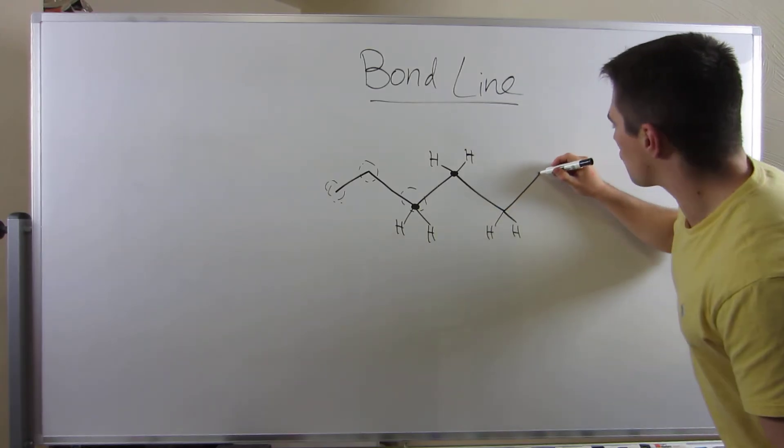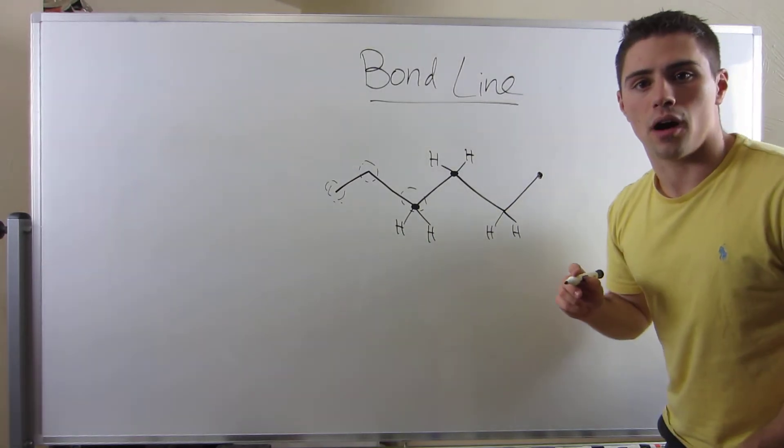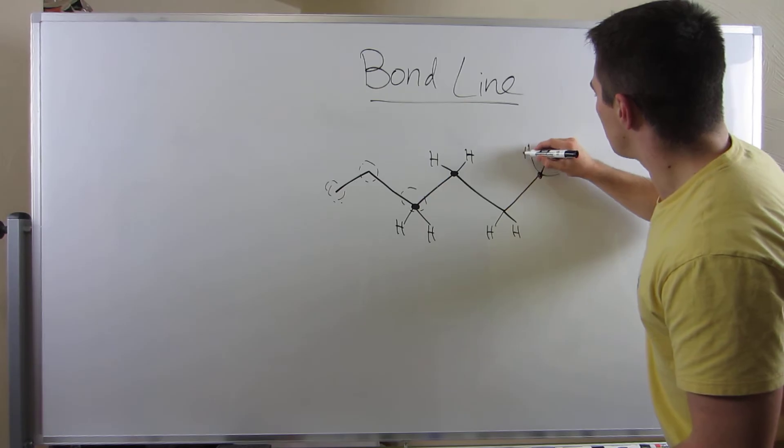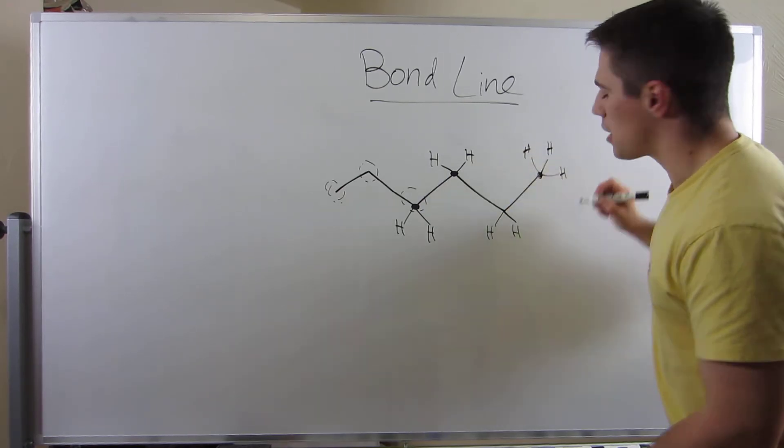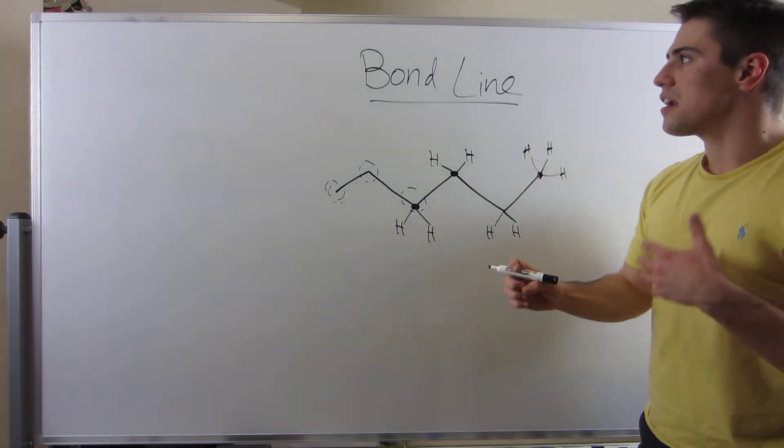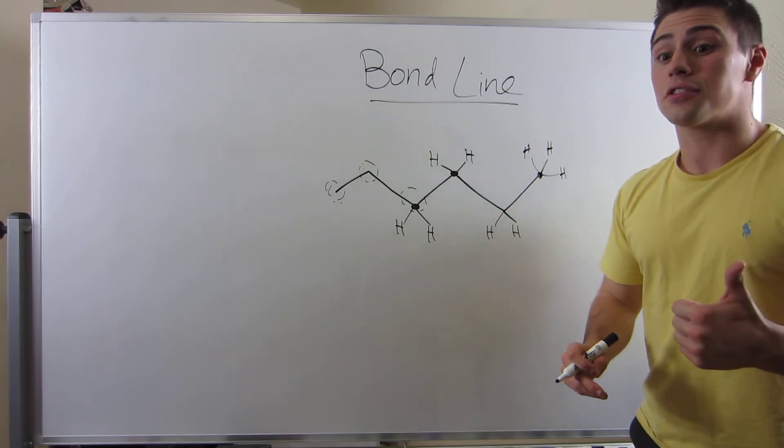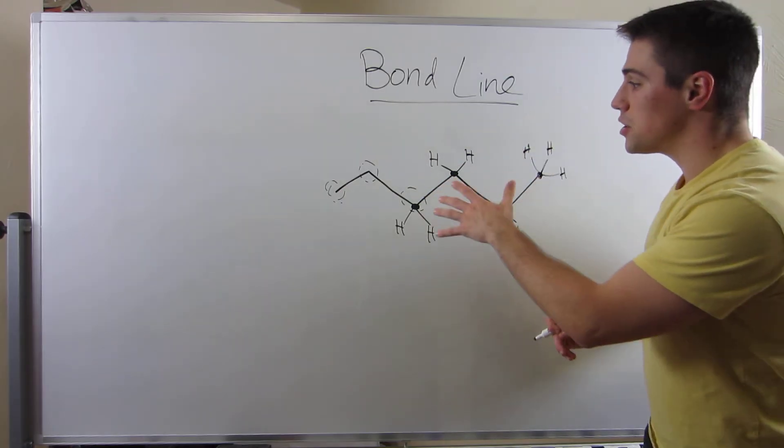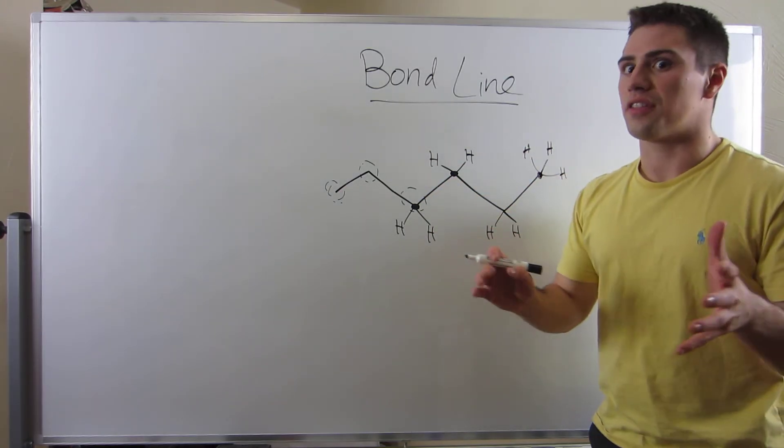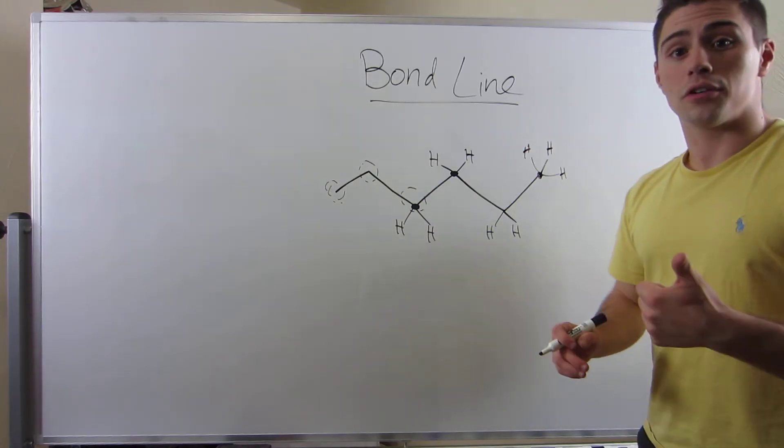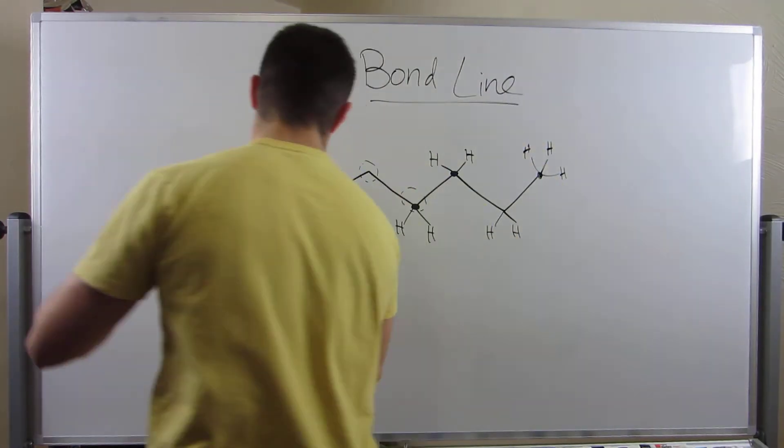And you can see that this guy over here, he only has one carbon bond. So he has three implied hydrogens. So that's kind of the beauty of bond line. It's faster. There's no hydrogens that you have to just fill in and kind of clutter everything up. So it's quicker and cleaner to read. So let me just draw you another example.